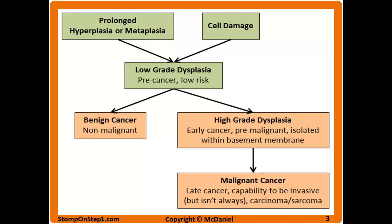Starting at the top left of the flowchart: prolonged hyperplasia or metaplasia leads to dysplasia, and certain types of cellular damage can also cause dysplasia directly. Here we're talking about low-grade dysplasia, which is precancerous and has very low risk for causing disease or death. These low-grade dysplasias are for the most part reversible, which is why they're green. However, if not identified and addressed quickly, low-grade dysplasia can progress to cancer — either benign or malignant, and the big difference between them is metastatic potential.